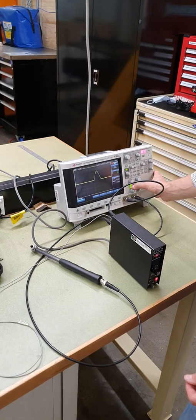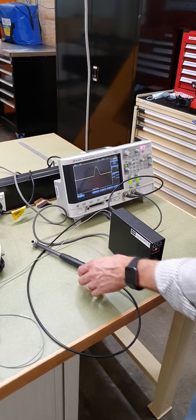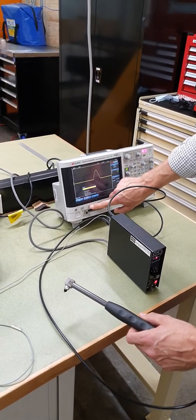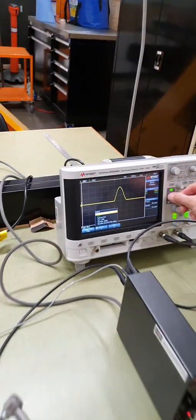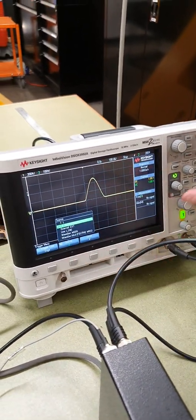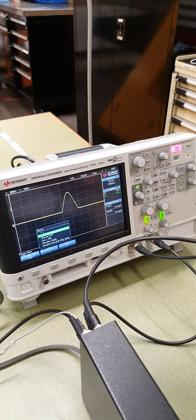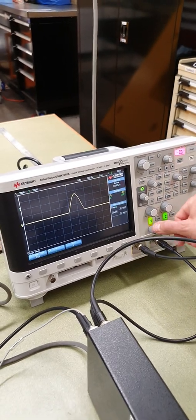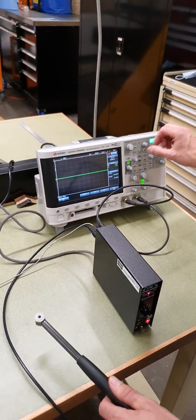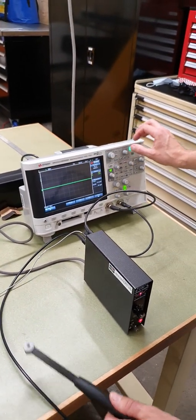I can switch to the second channel on the scope, and now I need to change my triggering. Rather than source one, I change to source two. Turn off channel one, don't need it. Channel two should be running, and softer tip.